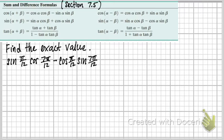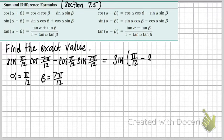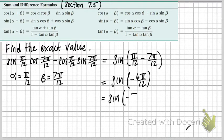So that means that my alpha is equal to π/12 and my beta equals 7π/12. So all I'm going to do is write that in there. So that means this is going to be the sine of π/12 minus 7π/12. And then this is actually equal to the sine of -6π/12, which if you know 6π/12, that's going to be the sine of -π/2.